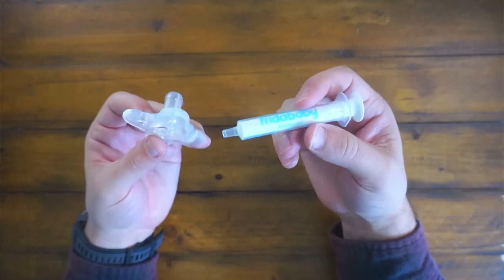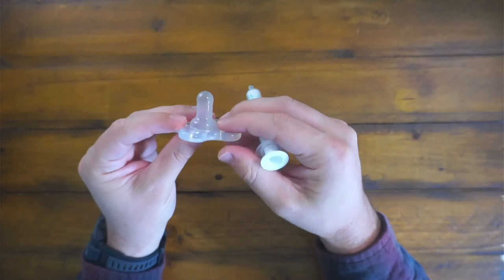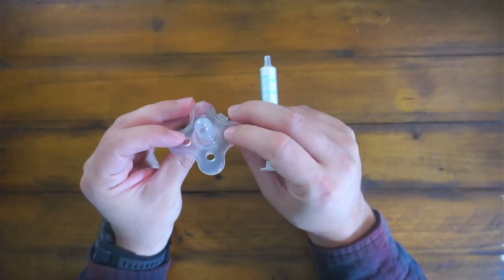And it's super easy to clean with warm, soapy water. Fill the syringe up with warm, soapy water. Plunge it through the pacifier just to clean it. It can be sterilized as well.